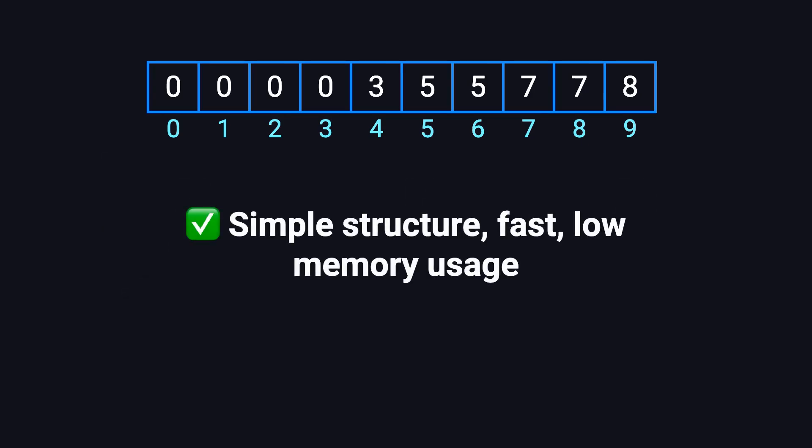Using an array to implement Union-Find is simple, extremely fast, and highly memory efficient. And when we add optimizations like path compression and union by rank, which we'll cover very soon, both the find and union operations can be made nearly constant time. This makes Union-Find incredibly efficient and powerful in practice.